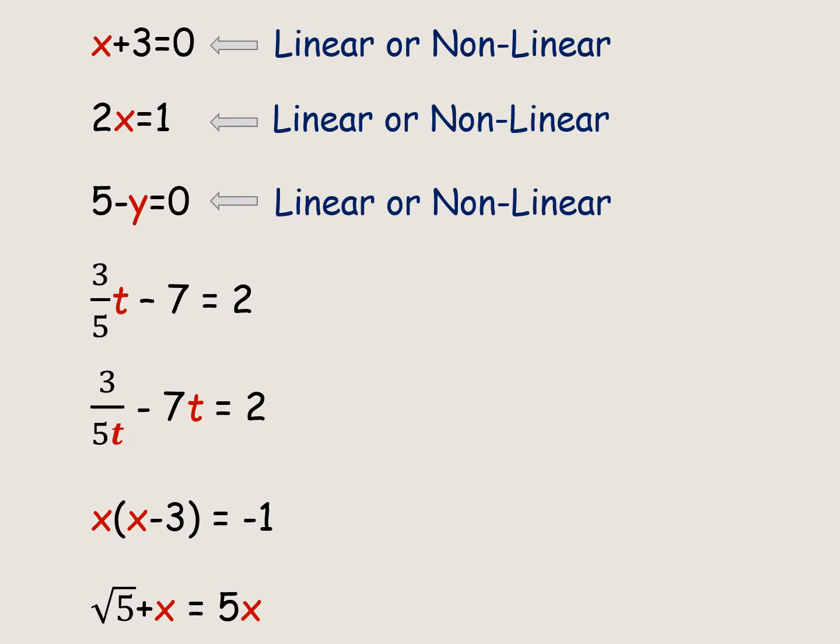Consider x plus 3 equals 0: we have only one variable x with power equal to 1, so this equation is linear. Similarly, 2x equals 1 has variable x with power equal to 1, so it is a linear equation as well. For 5 minus y equals 0, this equation is linear because variable y has power equal to 1.